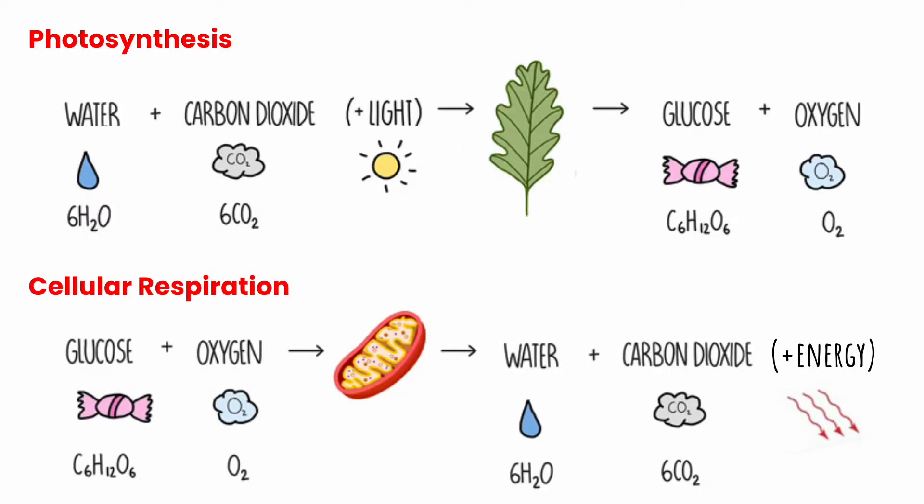Cellular respiration is a process that releases usable energy in the form of what we call ATP from the chemical energy that's stored in glucose molecules. All animals, all living things, all cells need a continuous supply of energy in order to function because they need it to grow, to repair, and to reproduce.